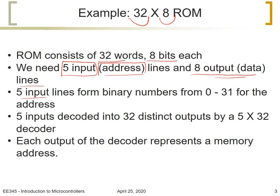The 5 input lines form the binary numbers from 0 to 31 for the address, and the 5 inputs will be decoded into a decoder which will produce 32 distinct outputs. Each output of the decoder represents a memory address of the word that we need to read from.